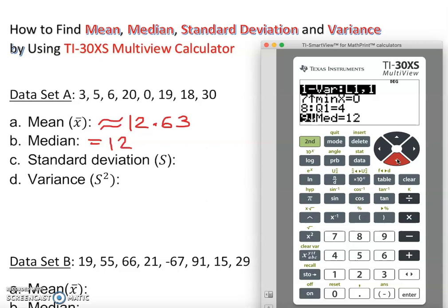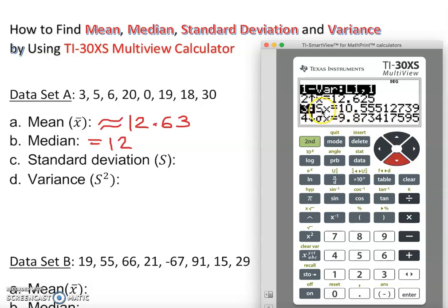Next one is standard deviation, which is sample standard deviation. It's represented as s, represents sample standard deviation. So we have to look for s sub x. Where is the s in this calculator? s is here, s sub x, that's the sample standard deviation for those x data set. So we have 10.555 so many numbers. Of course, obviously you are not going to write all those numbers. We're going to do approximation here. We're going to have 10.56.